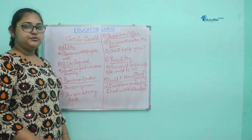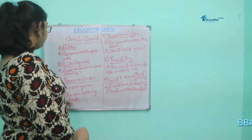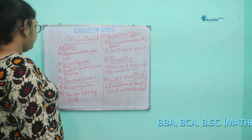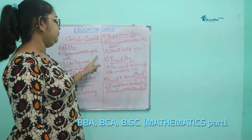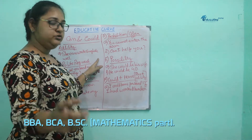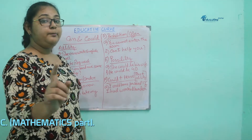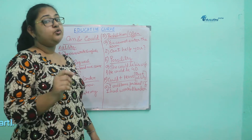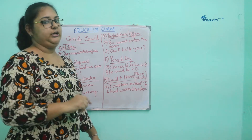Can and could is used for various functions. For example, ability, polite request, permission and order, prohibition and offer, possibility, and the use of could plus have that denotes past ability — meaning an action that could have taken place but did not take place.